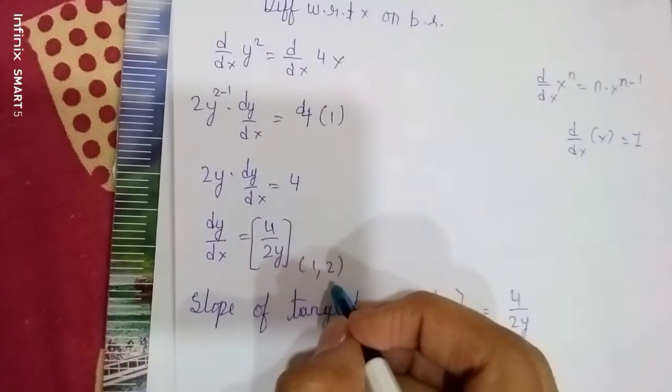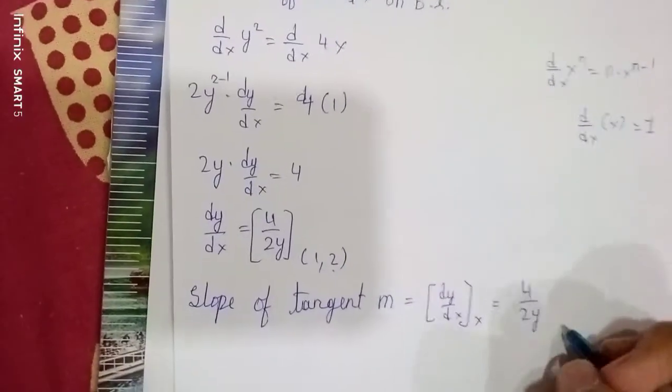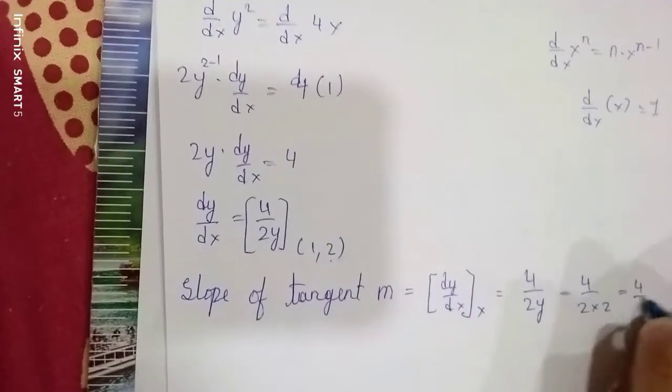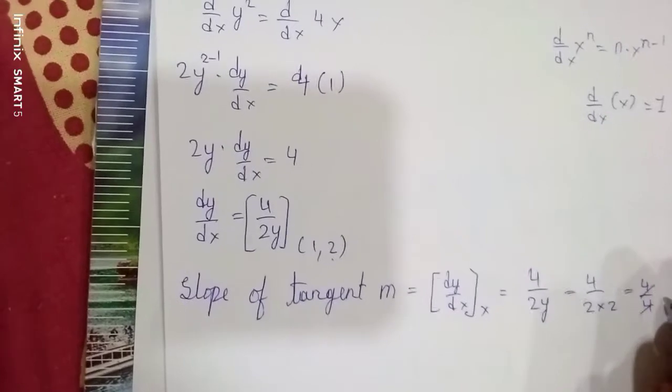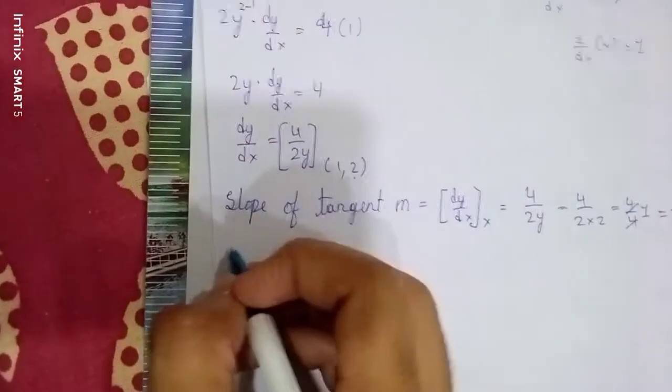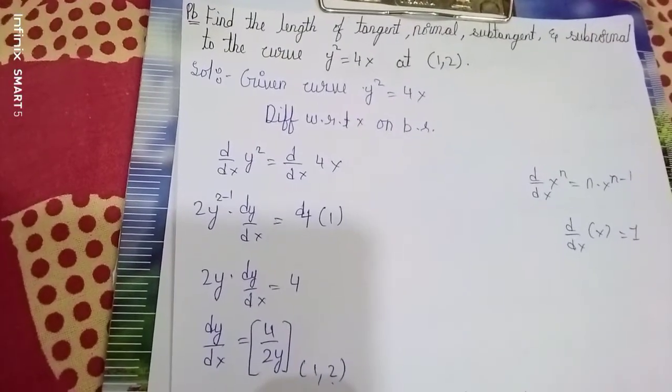Here what we have? 4/(2y). So y, we only need y value. So 4/(2 × 2) = 4/4 = 1.